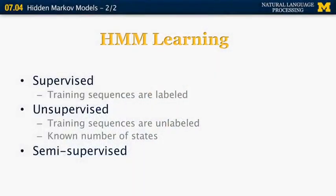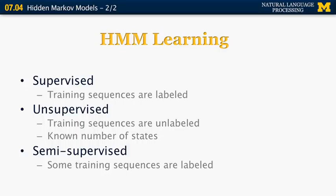The third category is called semi-supervised learning. In semi-supervised learning, we have some labeled training data, but most of the data is not labeled. For example, we might have a few hundred sentences that have been manually labeled for parts of speech, and then millions or tens of millions of sentences that have not been labeled.